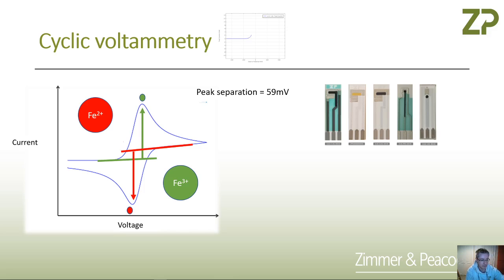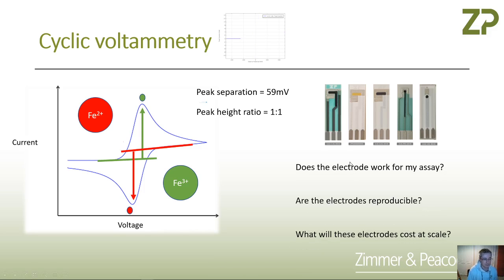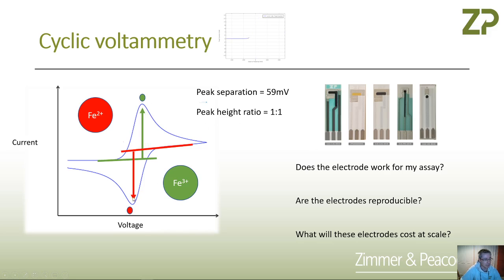I do get concerned that there's an over-reliance on this — if it's not 59 millivolts, then the electrode is considered no good for the application. People are also looking for a peak height ratio of one-to-one, where the oxidation peak is the same height as the reduction peak. At ZP, we're very focused on getting collaborators to market, so the questions we think are really important are: does the electrode work for my assay, are the electrodes reproducible, and what will these electrodes cost at scale? Cyclic voltammetry can be made more important than whether there's actually commercial merit in the electrode materials.